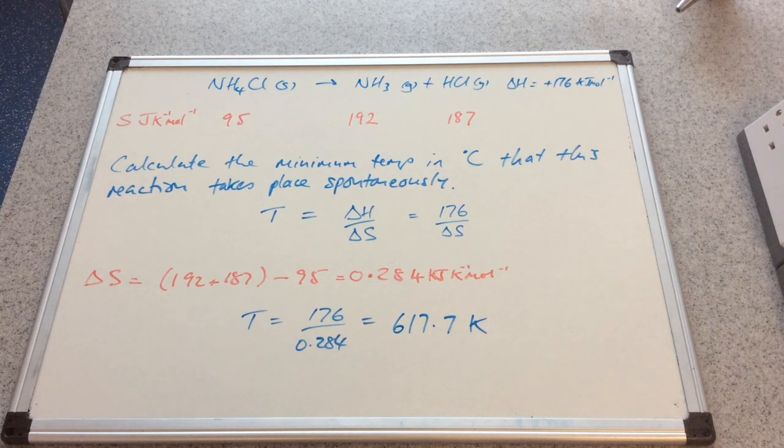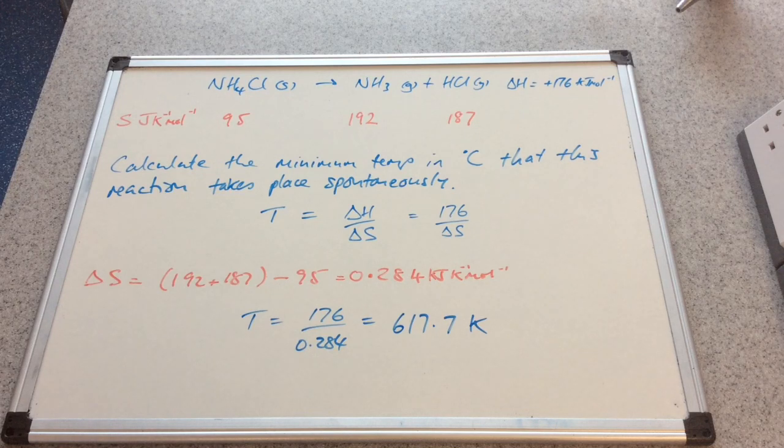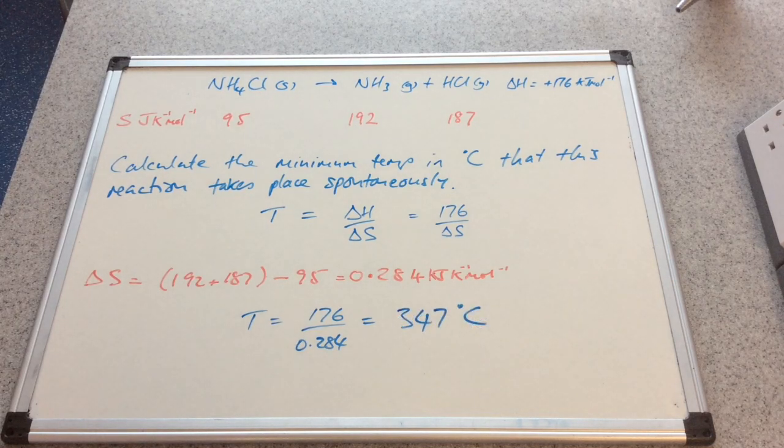So that gives us a kelvin temperature of 617.7. To turn that into Celsius, I need to subtract 273 and that comes out at a temperature of 347 degrees C.